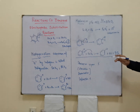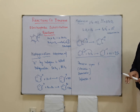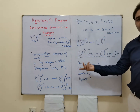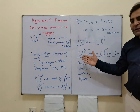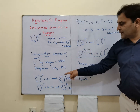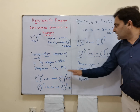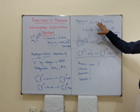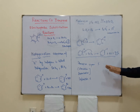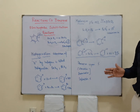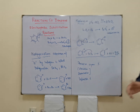This is how you have halogenation of benzene. Halogenation is the introduction of halogen into the benzene ring, or the substitution of hydrogen by halogen in benzene. Thank you for watching.